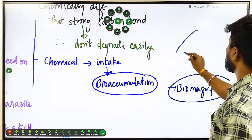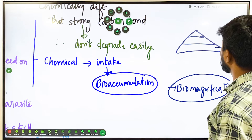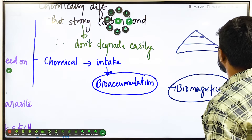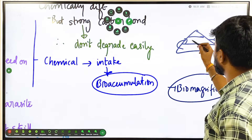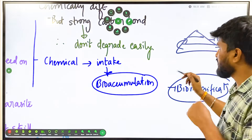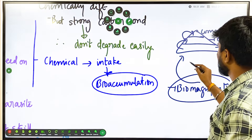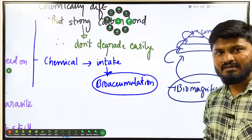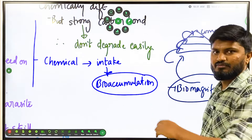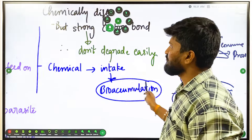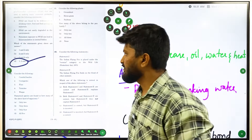Biomagnification is when concentration increases as we move from one trophic level to another — from producers to consumers. If the pollutant is consumed by one animal and then by another, it keeps increasing. Bioaccumulation is from nature to the first species in a trophic level; biomagnification is from one trophic level to another. For question 7, the correct answer is D — all of the above.